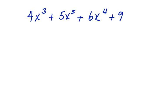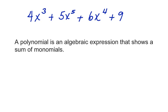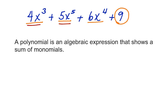Let's think about polynomials. What is a polynomial? A polynomial is an algebraic expression that shows a sum of monomials. Looking at this polynomial, you'll see we have monomials represented here, and then we have a constant here, which is also a term. Each one of these is a term as well. So you can see that this polynomial has four terms.